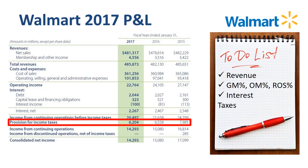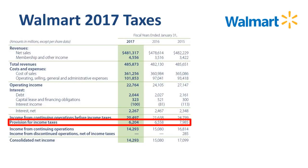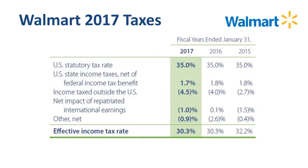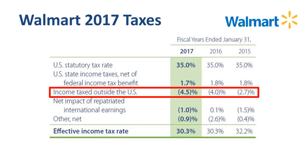The provision for income taxes in the P&L has decreased over the past three years, which sounds logical as the income before income taxes has also dropped. A useful number to calculate is the effective tax rate, which is simply the provision for income taxes divided by the pre-tax profit — this comes out to 30.3% for 2017. Walmart provides more detail: the US statutory tax rate is 35%, and the overall effective tax rate is lower primarily due to non-US income being taxed at lower local country rates.